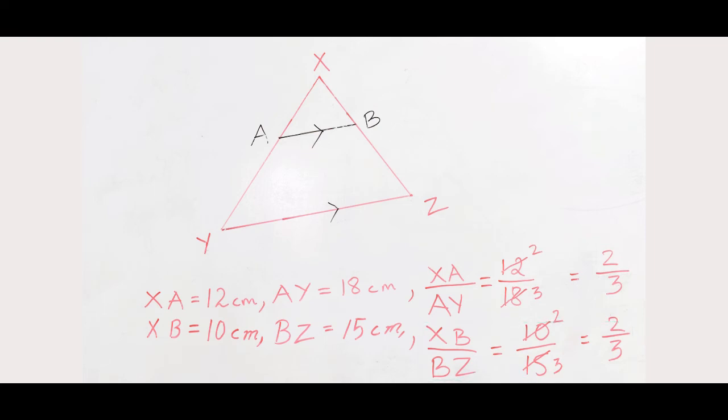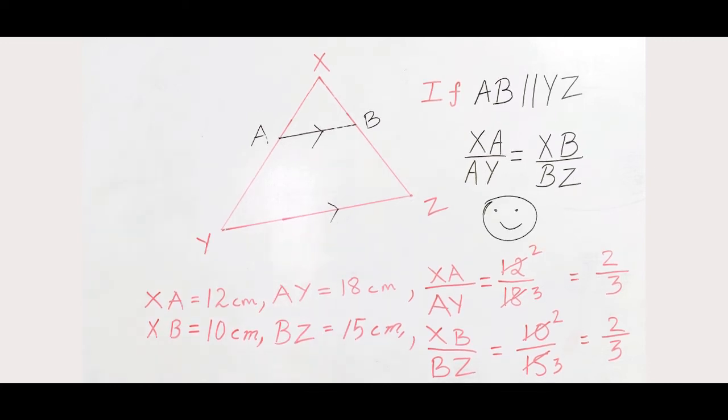So just like the theorem says, we found out that if AB is parallel to YZ, then XA by AY is equal to XB by BZ. So you can try to verify this theorem by yourself by taking any triangle with any random measurements and try to draw a line which is parallel to any side of that triangle and find out whether the other two sides are divided in the same ratio.